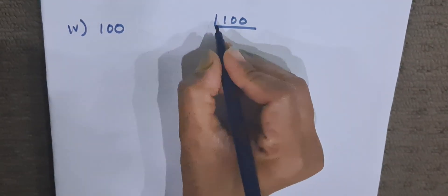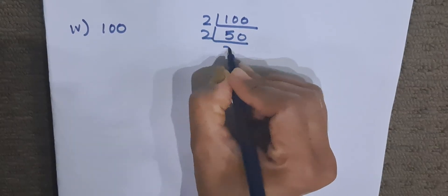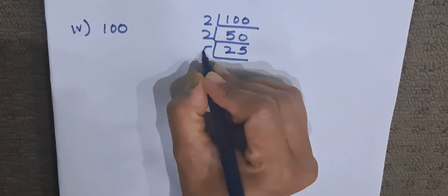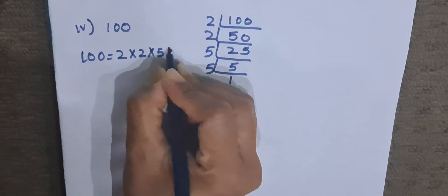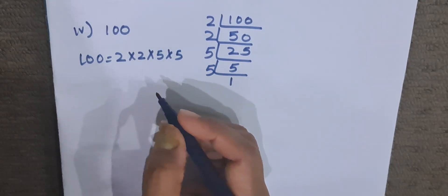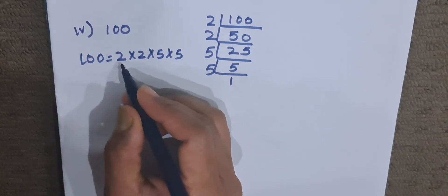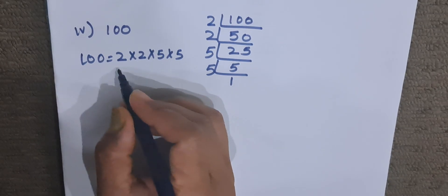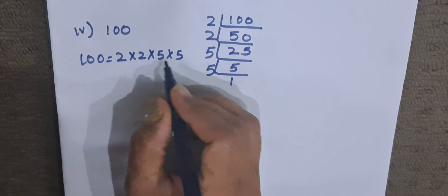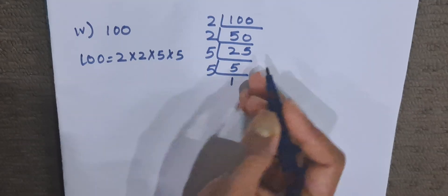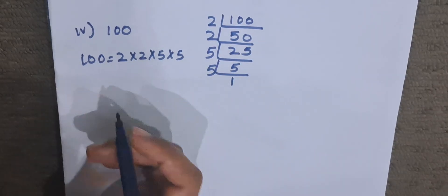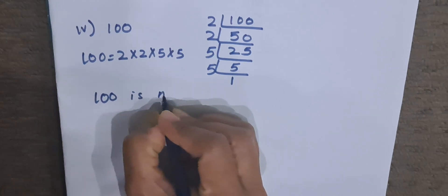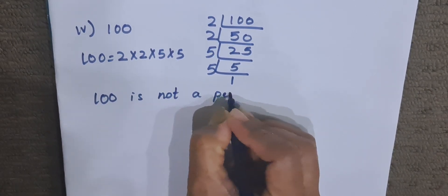Now the fourth one is 100. We factorize 100: 100 ÷ 2 = 50, ÷ 2 = 25, and 25 ÷ 5 = 5, ÷ 5 = 1. So the factors of 100 are 2 × 2 × 5 × 5. There are only two 2s and two 5s — neither form a complete group of three same numbers — so 100 is not a perfect cube.